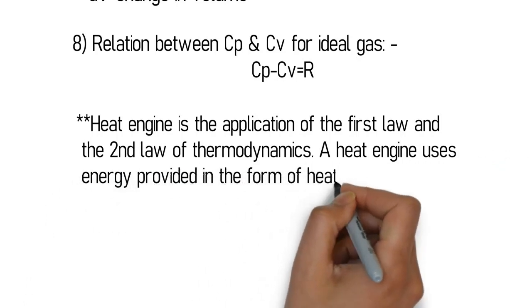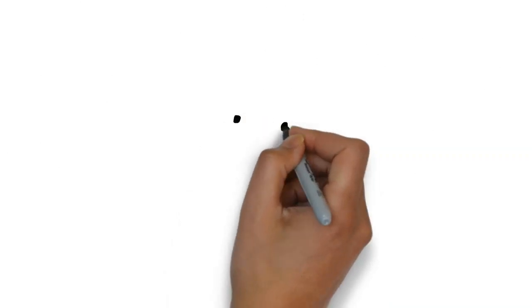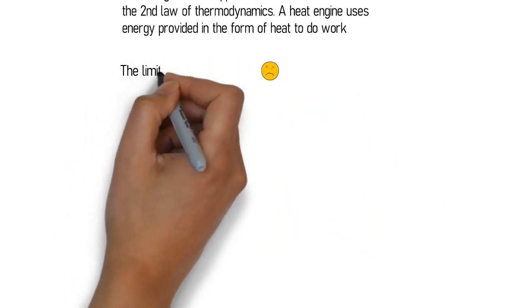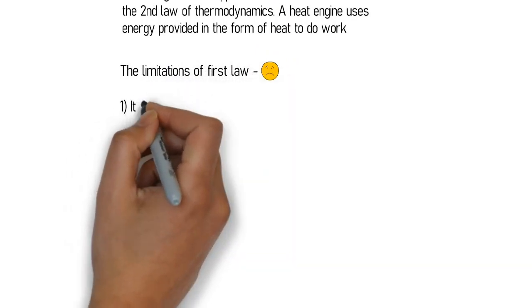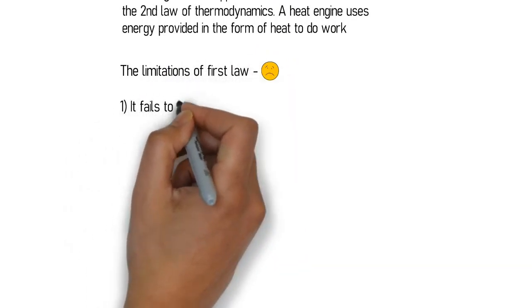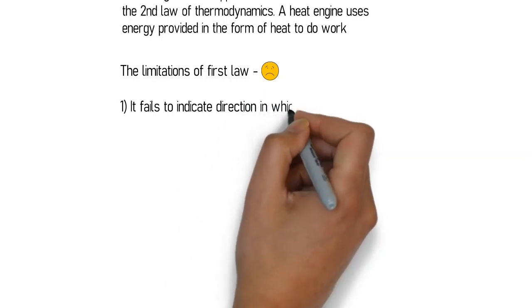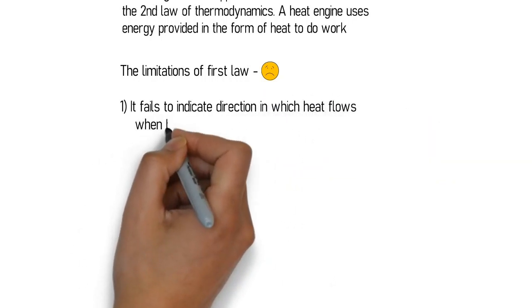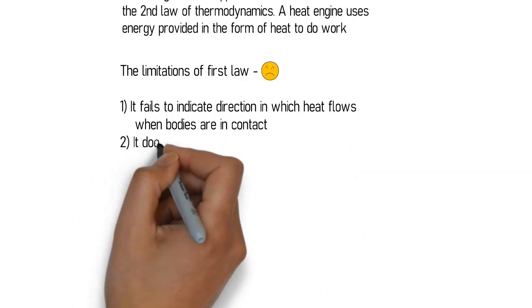The relation between Cp and Cv — Cp − Cv = R — is also an application of the first law of thermodynamics for an ideal gas. A heat engine is a device which converts heat energy into work; it is an application of both the first and second laws of thermodynamics.